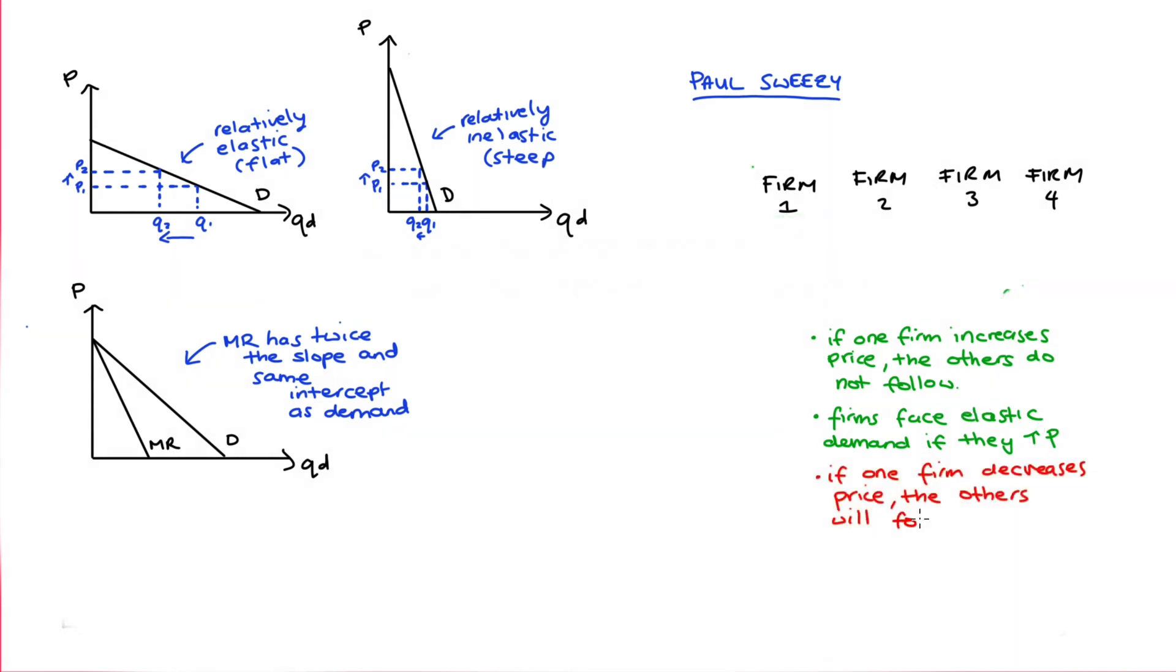Now, if a firm reduces their price, Sweezy argues, the other firms will follow them and will also reduce their prices in fear of losing all of their customers. So if firm one decreased their price, the other firms don't want to lose their customers to firm one, so they're also going to lower their price. But this ultimately means that if firm one reduces their price, the quantity demanded for firm one's products will not increase that much, if at all, because all the other firms have reduced their price as well. To say this in another way, if the price decreases, the firm faces quite an inelastic demand. Demand doesn't change a lot in response to that price decrease.